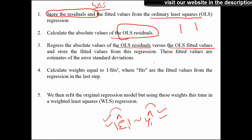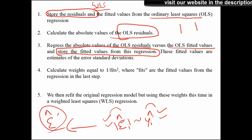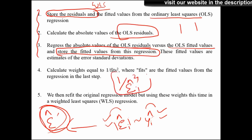Store the fitted values from this regression — call them ê (e-hat). These fitted values of the errors will be smoother compared to the original residuals. Step 4: Calculate weights equal to 1 divided by ê squared (1/ê²). We treat ê as the estimated standard deviation for each observation, since we didn't have standard deviation in the initial data. These three steps give us the standard deviation to calculate the weight.